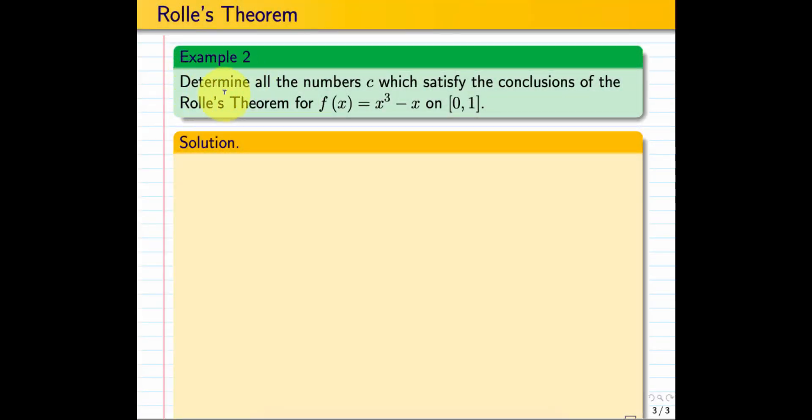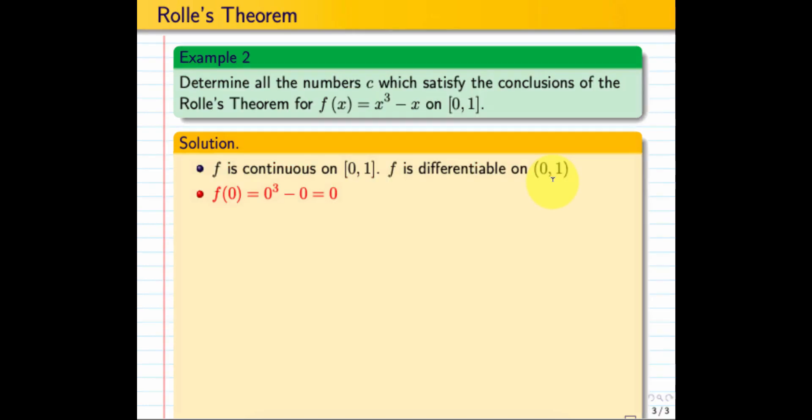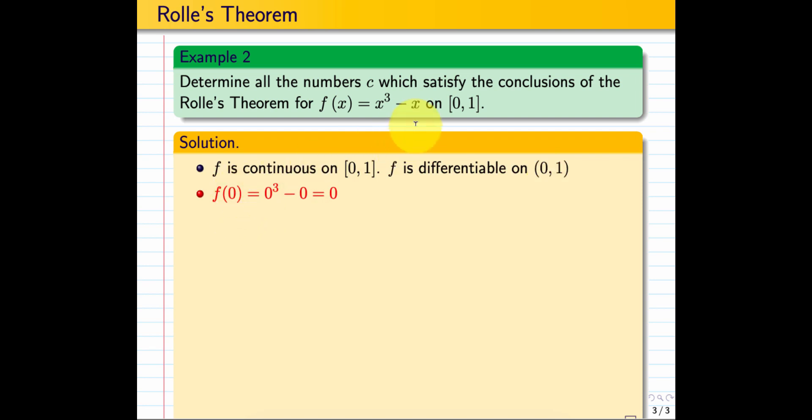Example 2: Determine all the numbers c which satisfy the conclusion of Rolle's Theorem for f(x) equals x³ minus x on [0, 1]. f is continuous on [0, 1] because it is a polynomial. f is differentiable on (0, 1). First, find f(0). a is 0, b is 1. f(0) is 0³ minus 0, which equals 0.